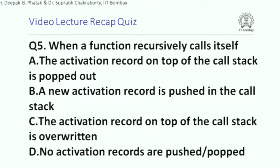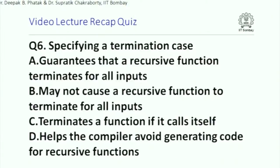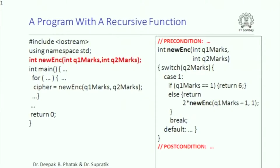Question 5: when a function recursively calls itself, A) the activation record on top of the call stack is popped out, B) a new activation record is pushed onto the call stack, C) the activation record on top is overwritten, or D) no activation records are pushed or popped. Specifying a termination case guarantees or may not cause a recursive function to terminate for all input.